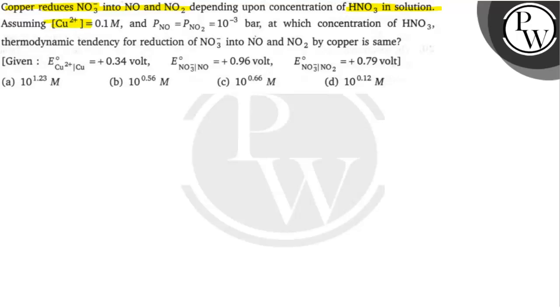Assuming Cu2 plus is equal to 0.1M, PNO is equal to PNO2 is equal to 10 to the power minus 3 bar, at which concentration of HNO3, thermodynamic tendency for reduction of NO3 minus into NO and NO2 by copper is same?